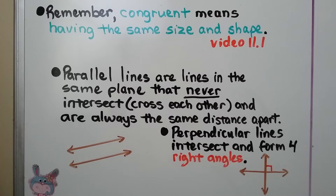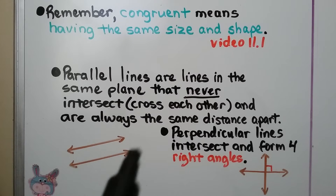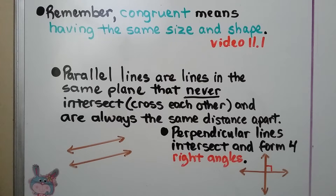Remember from video 11.1: congruent means having the same size and shape. Parallel lines are lines in the same plane that never intersect — they never cross each other, and they're always the same distance apart. They run side by side and they never meet.